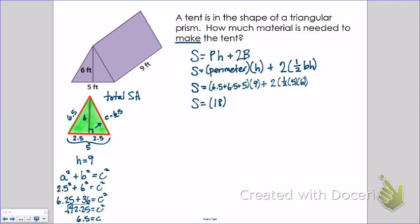When I start working that out, 6.5 plus 6.5 plus 5 is 18, times 9, plus 2 times 1 half, 5 times 6 is 15. That's 162 plus 30, which makes my surface area 192 square feet.